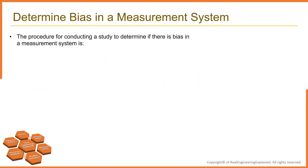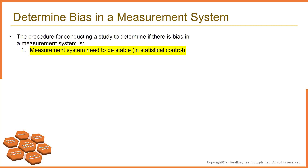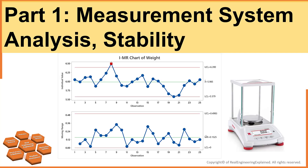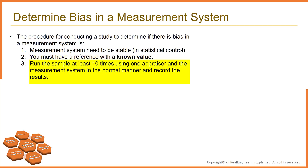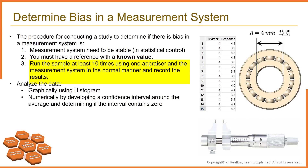The procedure for conducting a study to determine if there is bias in the measurement system is as follows. Step one: it is important that the measurement system be stable when the bias study is done. Step two: you must have a reference with a known value — a traceable standard; for example, scales often have weights that serve as standards. Step three: run the sample at least 10 times using one appraiser and the measurement system in the normal manner and record the results. The more times you run the sample, the greater the accuracy of the bias study.